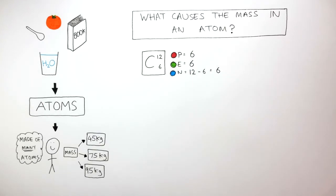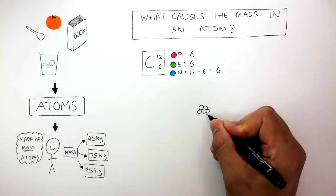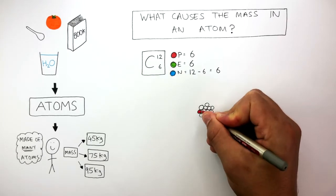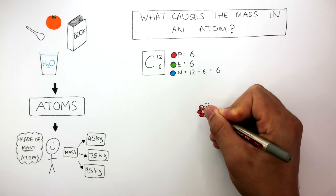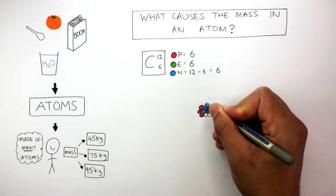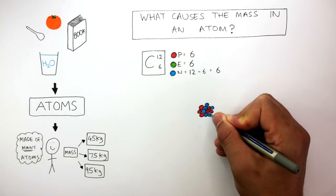We can use this information to draw the nucleus of a carbon atom, which is what I'm doing now. There are 6 protons, represented by the red circles, and 6 neutrons, represented by the blue circles. And then in the shells, there are 6 electrons.